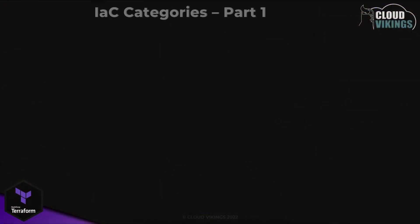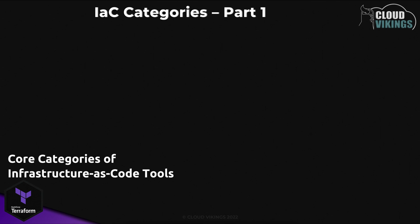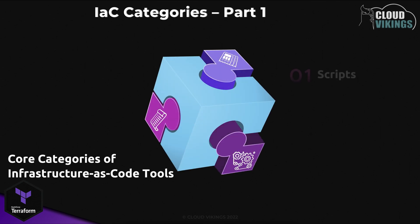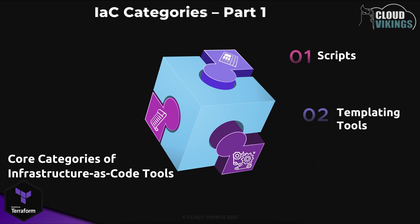In our previous lesson we had a brief overview of the five core categories of infrastructure as code tools. In this video we'll be covering the first three: ad hoc scripts, templating tools, and configuration management tools. So let's understand the first one — scripts in the context of infrastructure as code.